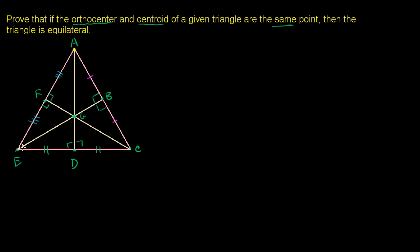Let's compare triangle AFG to triangle EFG. They share side FG. Side EF is congruent to side AF, since G is the centroid and F is the midpoint. Angle EFG equals angle AFG — they're both 90 degrees. So by side-angle-side congruency, triangle AFG is congruent to triangle EFG.